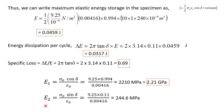Similarly, the loss modulus E2 is given as sigma naught times sin delta over epsilon naught. Substituting: 9.25 multiplied by sin delta, which is 0.11, divided by 0.00416, gives E2 equal to 244.6 megapascal.